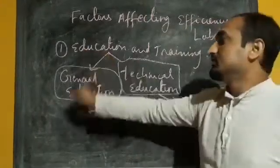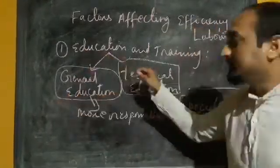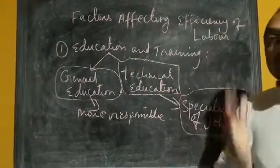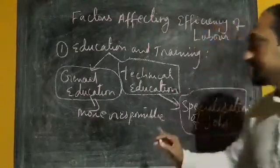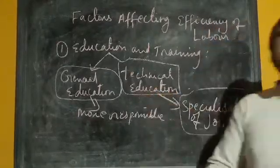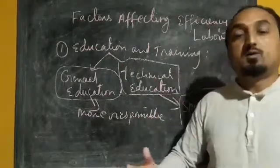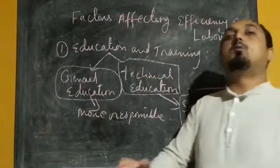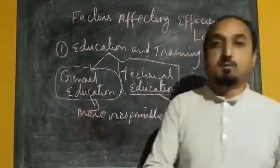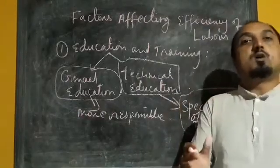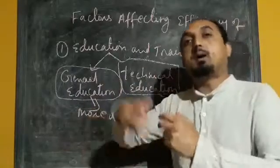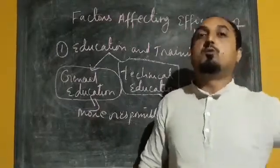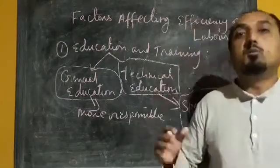So education and training can be divided into two parts: general education and technical education. General education helps workers become more responsible and sincere, which improves their efficiency. Technical education helps workers specialize in a particular job — this relates to division of labour. If one worker is specialized in one job, he will do that job repeatedly and become more efficient. Another worker specialized in a different kind of work will focus on that work only, making himself more efficient.